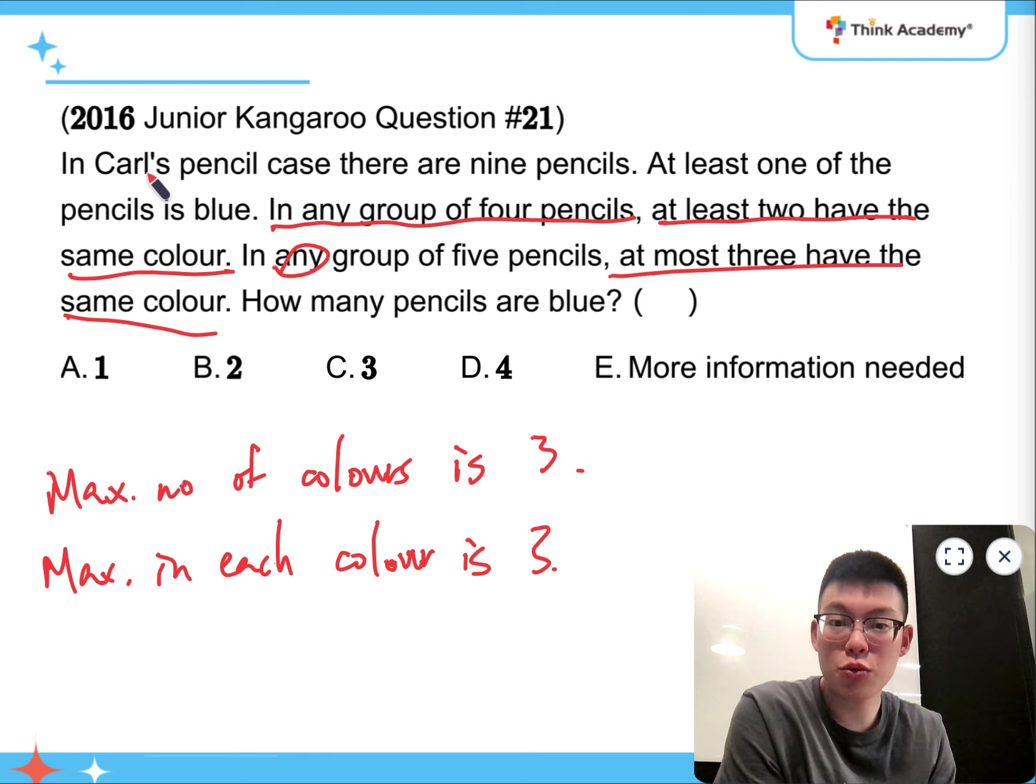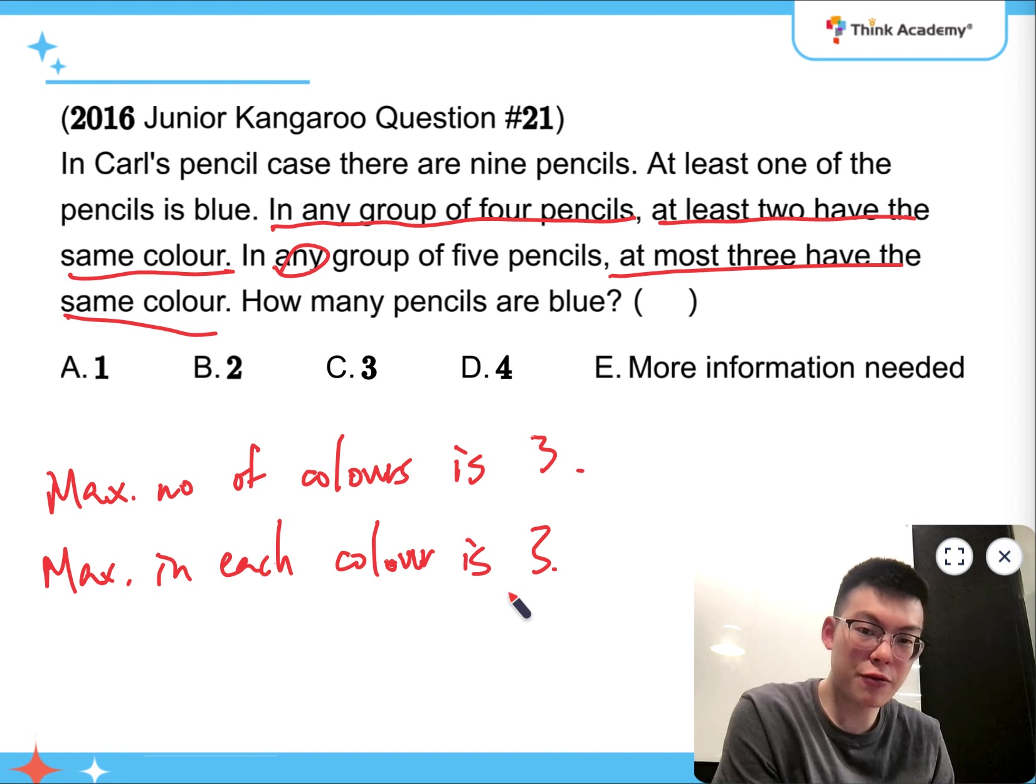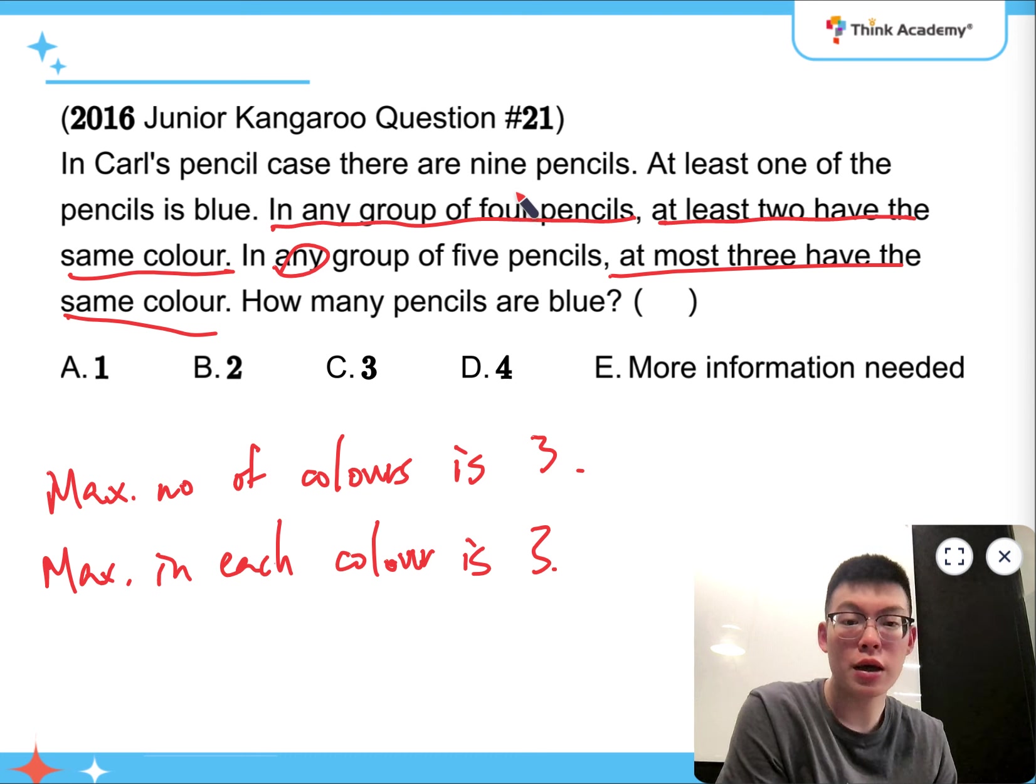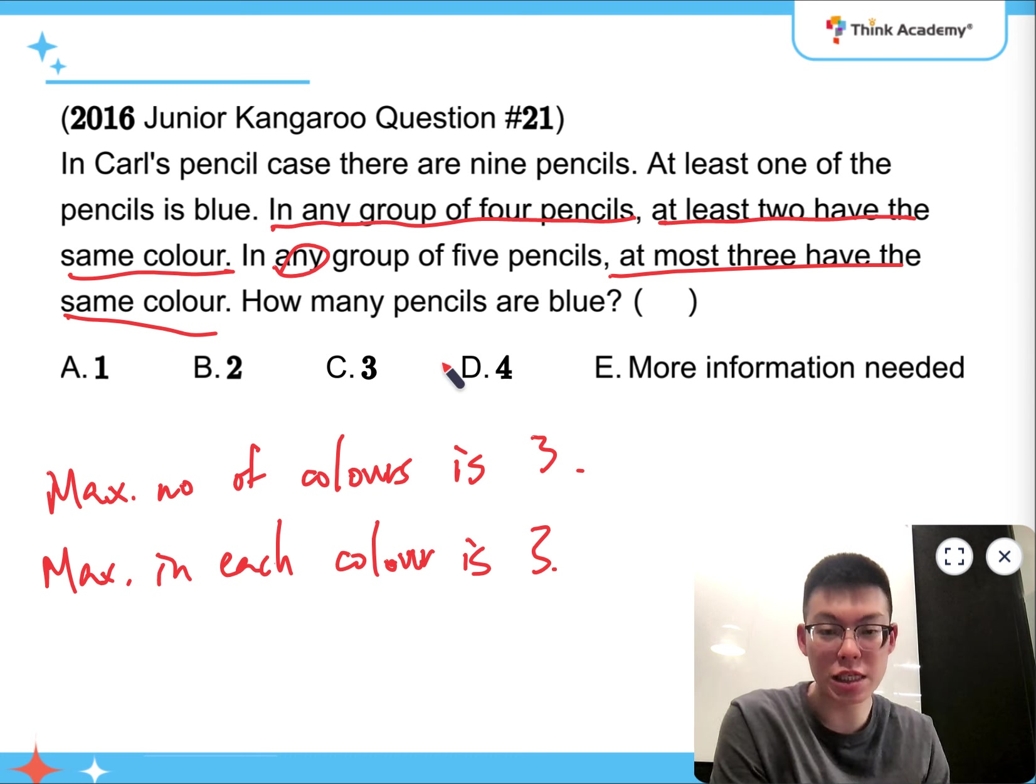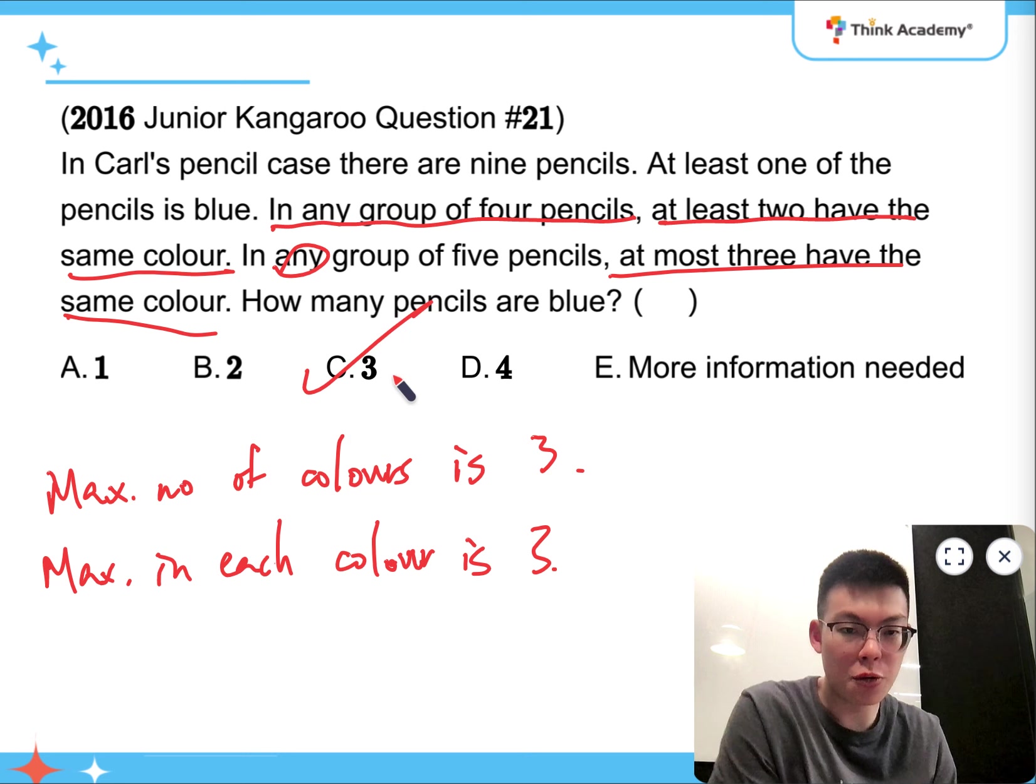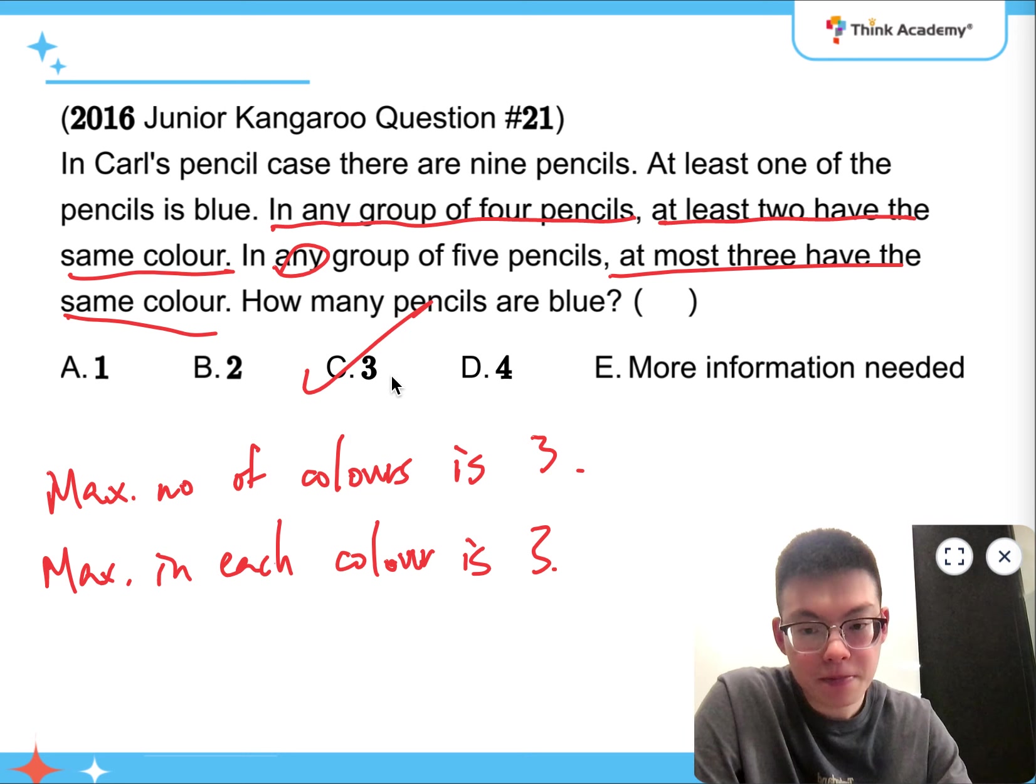So in the end, we can see that if the maximum number of colors is 3, and the maximum number of pencils in each color is 3, 3 times 3 is equal to 9, which means that all the 3 colors would have 3 pencils in each of them. So 3 pencils are blue. Alright.